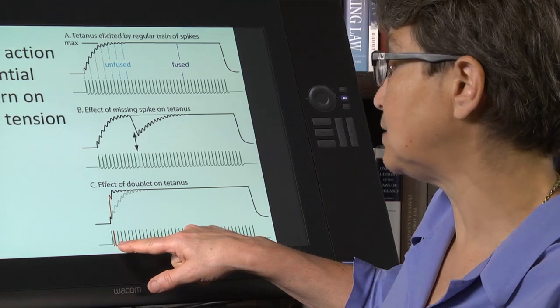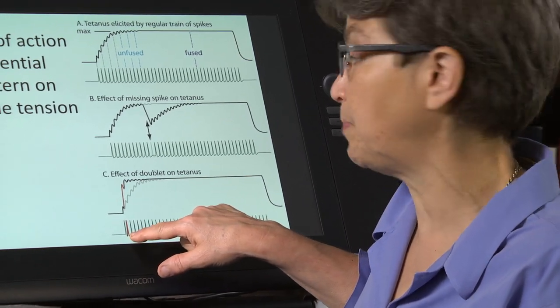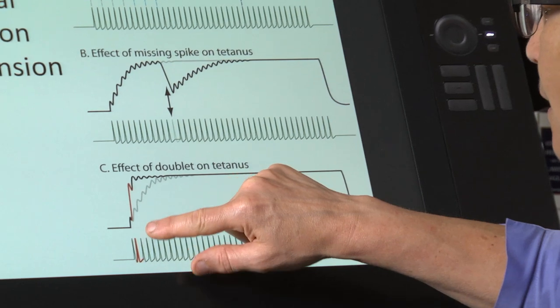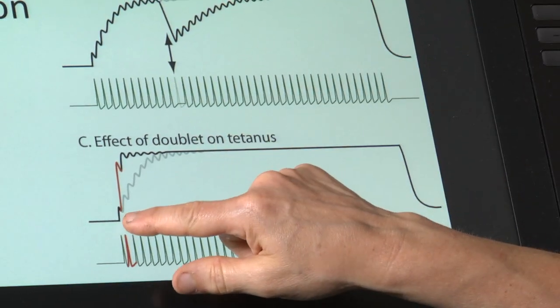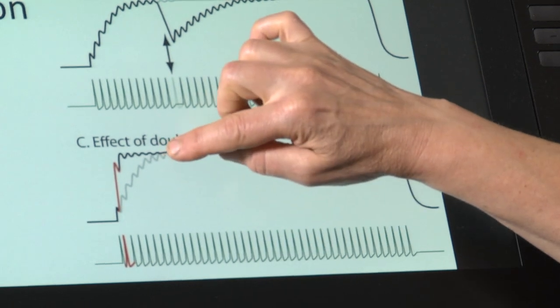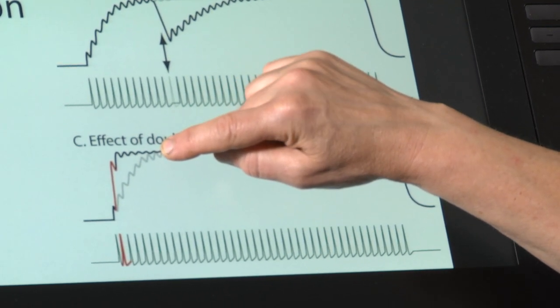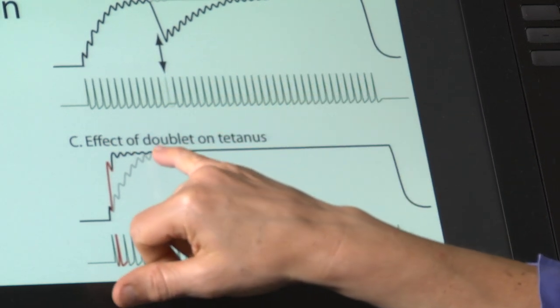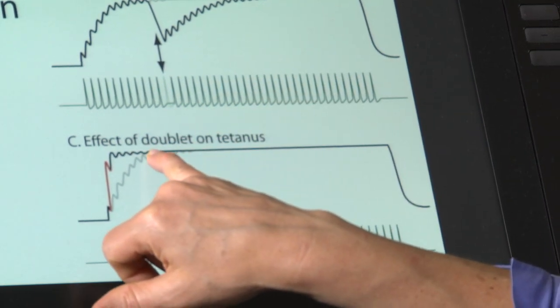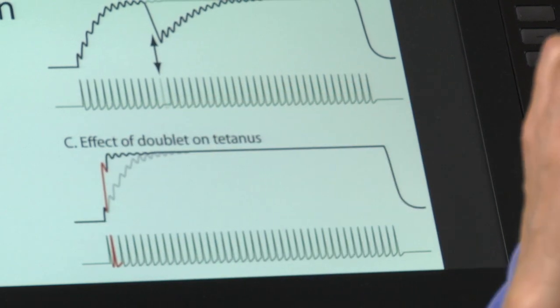Conversely, what's the effect of adding in a spike? Well, the effect of adding in a spike is also disproportionately large. In this case, instead of taking this much time to reach unfused tetanus, you reach unfused tetanus really quickly and you reach tetanus about the time that you would normally reach unfused tetanus.